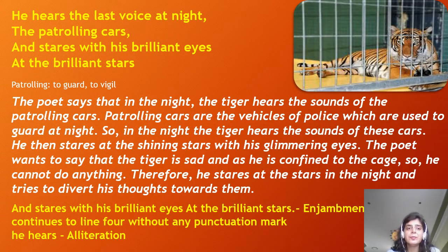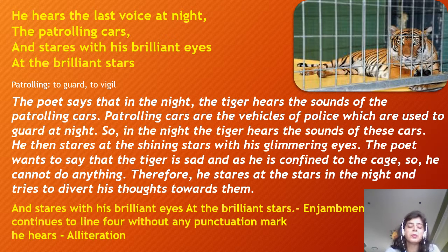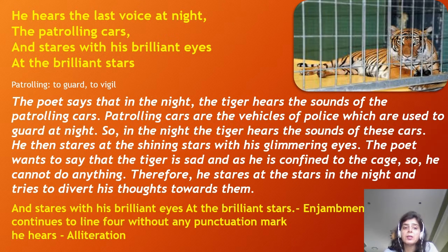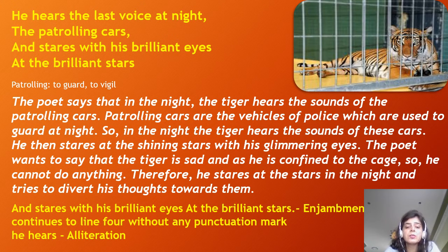Coming to the last stanza: 'He hears the last voice at night, the patrolling cars, and stares with his brilliant eyes at the brilliant stars.' 'Patrolling' means to guard, to keep an eye on. The poet says that at night the tiger hears the sounds of patrolling police cars used to guard at night. He then stares at the shining stars with his glimmering eyes. The poet wants to say the tiger is sad and confined, so he stares at the stars at night to divert his thoughts.